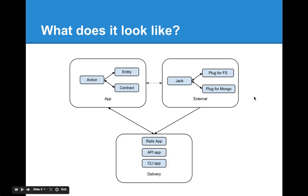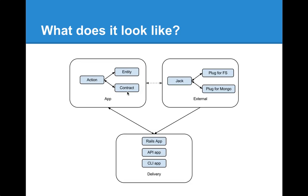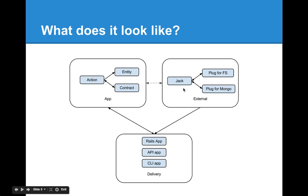So it looks like this. Your app is where the actions — things that do things — and entities — things that contain things — and contracts, which allow for data to be pluggable in your system. That's your app. Your delivery mechanism, like a Rails app, an API app, or a command line app, is separate from your actual app. The delivery mechanism is the integration point between the app and the external data sources, and your external data sources are defined by jacks and plugs. A jack is essentially a data router, and a jack can have many plugs. Plugs are things that talk to your file system or your database like Mongo, MySQL, and so forth.